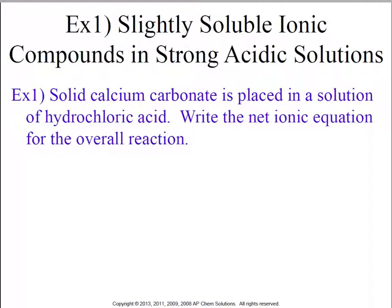Okay, here's an example problem. So solid calcium carbonate, that's CaCO3, is placed in a solution with hydrochloric acid. Hydrochloric acid is going to generate the H pluses. We know Cl minus is going to be a spectator because it always is. And so what that's going to generate then is H2CO3 and calcium 2 plus.